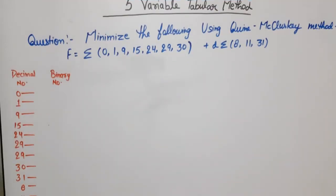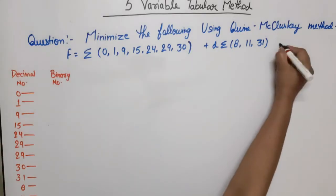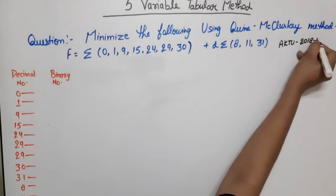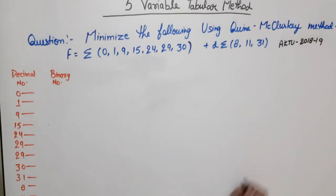Hello everyone. In this video lecture of Digital System Design or Digital Electronics, I am going to take one question of 5-variable tabular method. This question is from AKTU 2018-19. According to the question, minimize the following using the Quine-McCluskey method. Quine-McCluskey means tabular method.